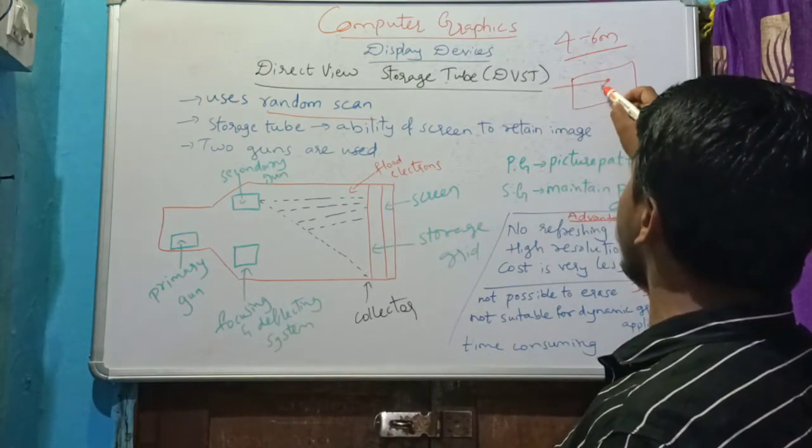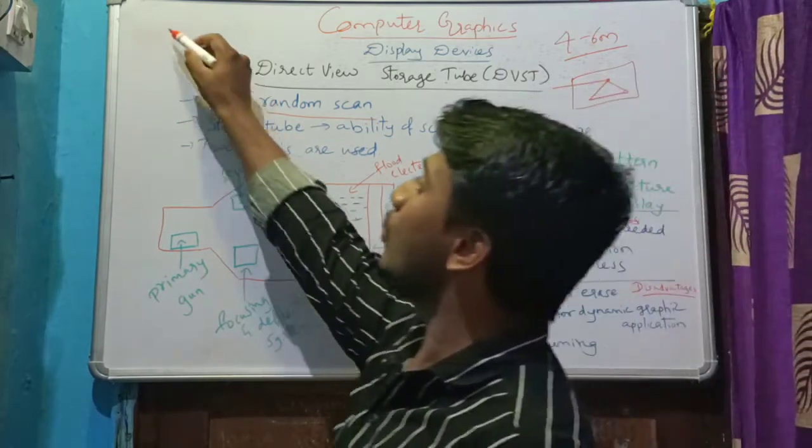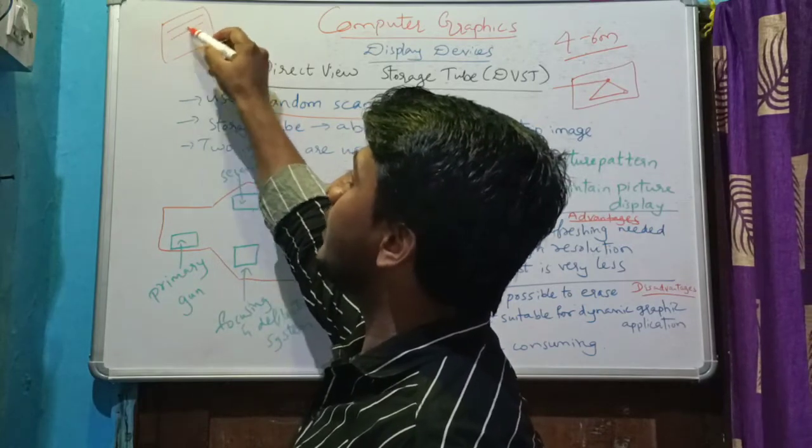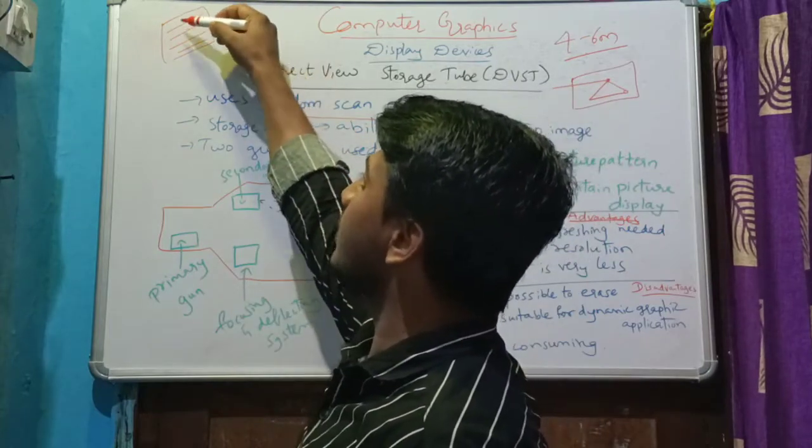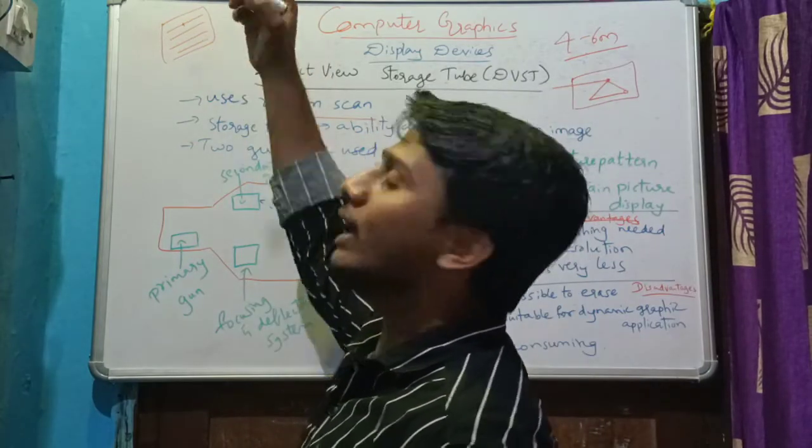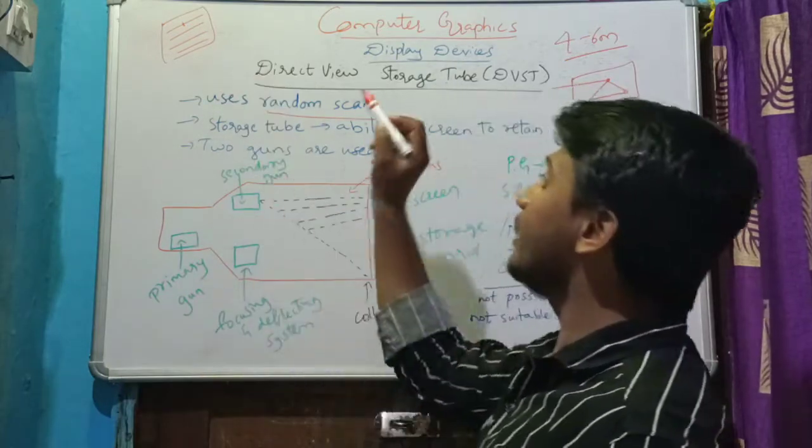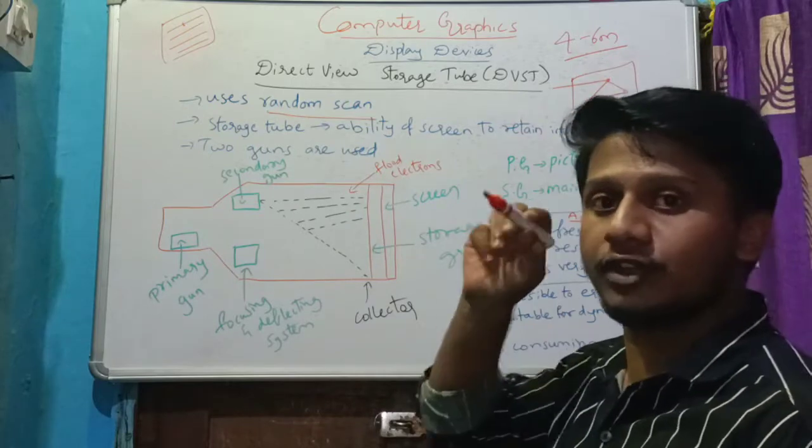Whereas in raster scan, what was happening? The screen, you are going to emit the beam across the screen row by row. Wherever you want to draw the image, there the intensity value will turn on. That was about raster scan. But here, DVST uses random scan. That is, wherever you want to produce the image, there only you will be emitting the electron beam.